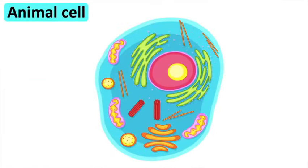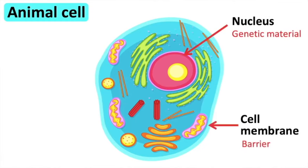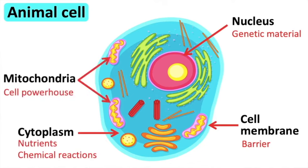Animal cells have irregular shapes. They contain a nucleus, cell membrane, cytoplasm, mitochondria, and ribosomes.